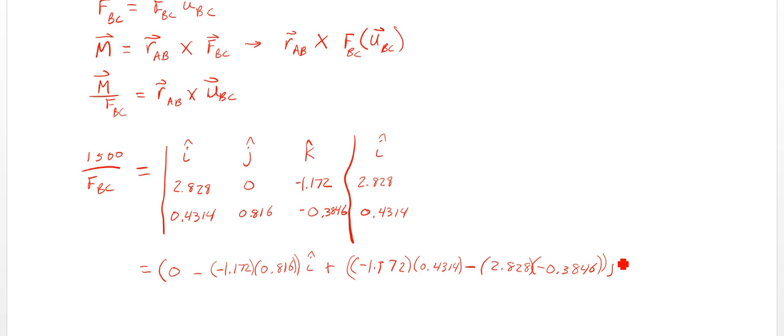So I'm going to keep a plus sign here for my j and go this direction, minus that. So I'm going to have negative 1.172 times 0.4314, minus, I'm going this way, 2.828 times negative 0.3846. And then for k, 2.828 times 0.816, minus, minus 0, so we have 0 times 0.4 something, and that's all k. So we add those up. What do we end up with? We get, we have a negative something here, so we get 0, that becomes 0.9564 i.